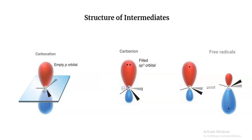In a carbanion we have three bonds and also two extra electrons because this is a negatively charged intermediate. That means this carbon has four electron domains. Recalling VSEPR theory, any atom connected to four electron groups has a tetrahedral structure. But with one lone pair and three bond pairs, the geometry is trigonal pyramidal — a distorted tetrahedral structure. So carbanions have a trigonal pyramidal structure with sp3 hybridization.